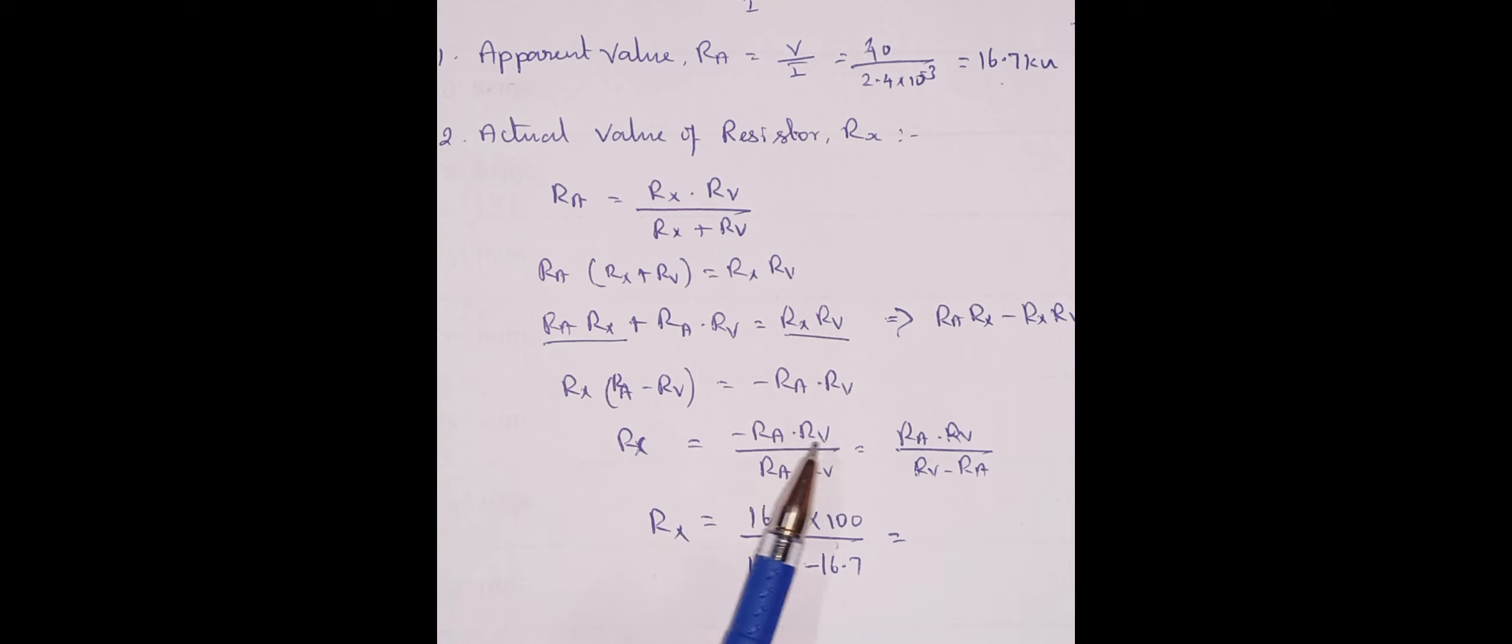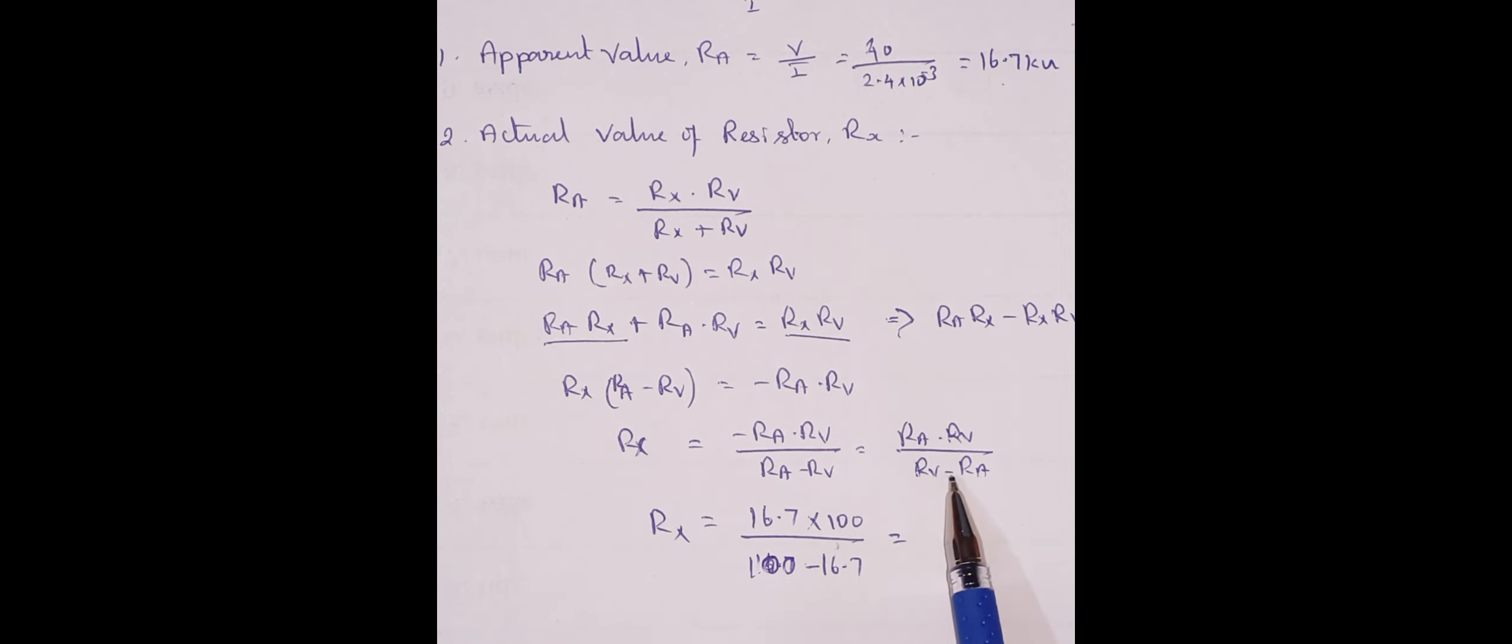Again, as I am having minus, I will take this side Rv. So Ra dot Rv divided by Rv minus Ra we will get.